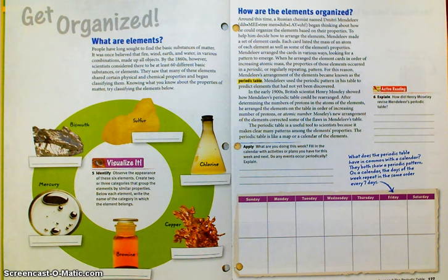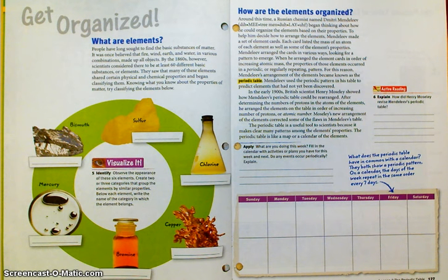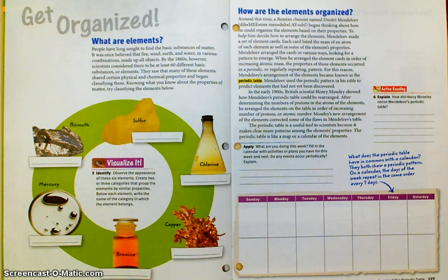Mendeleev used the periodic pattern in his table to predict elements that had not yet been discovered. In the early 1900s, British scientist Henry Moseley showed how Mendeleev's periodic table could be rearranged. After determining the numbers of protons in the atoms of elements, he arranged the elements on the table in order of increasing atomic number, or the number of protons. Moseley's new arrangement of the elements corrected some of the flaws in Mendeleev's table.